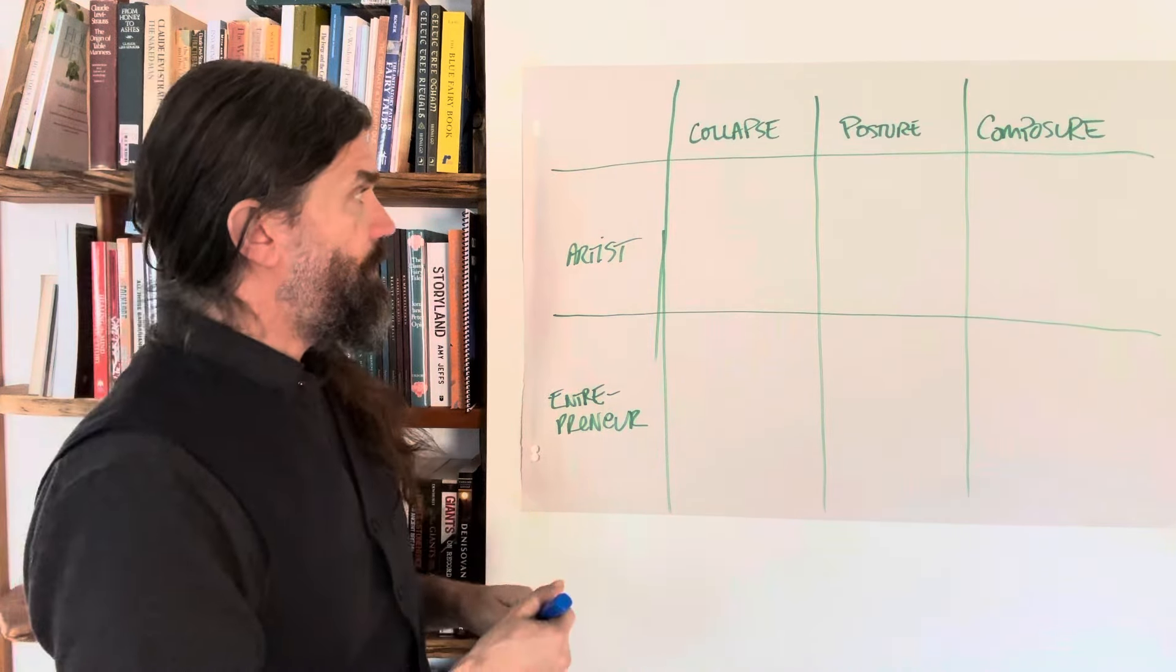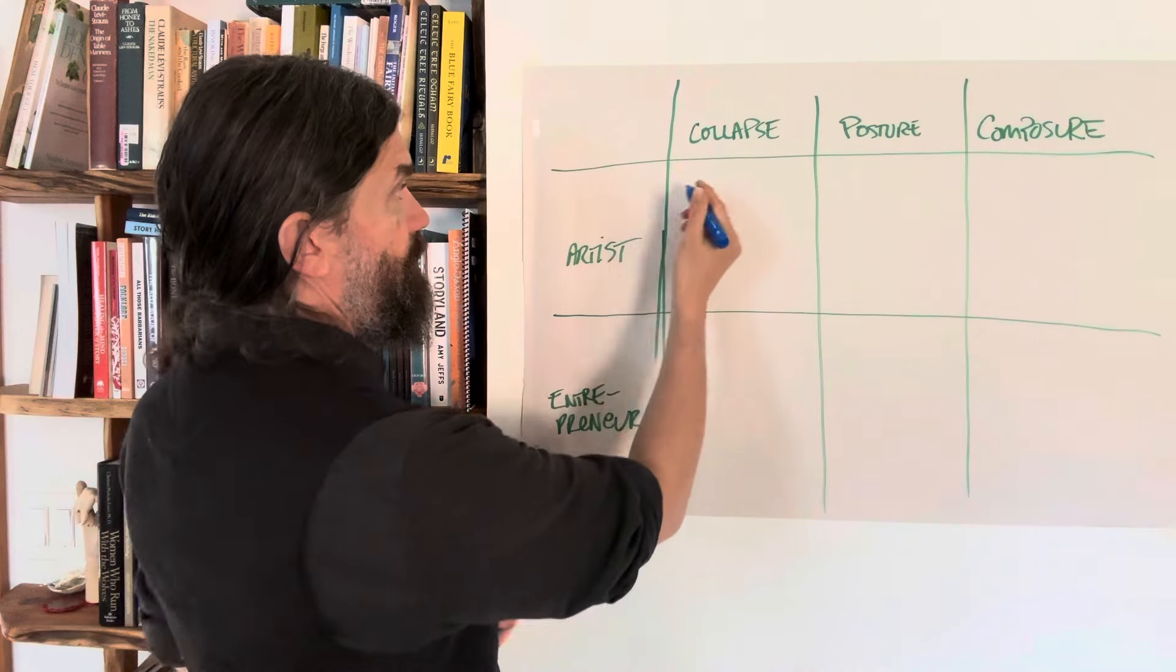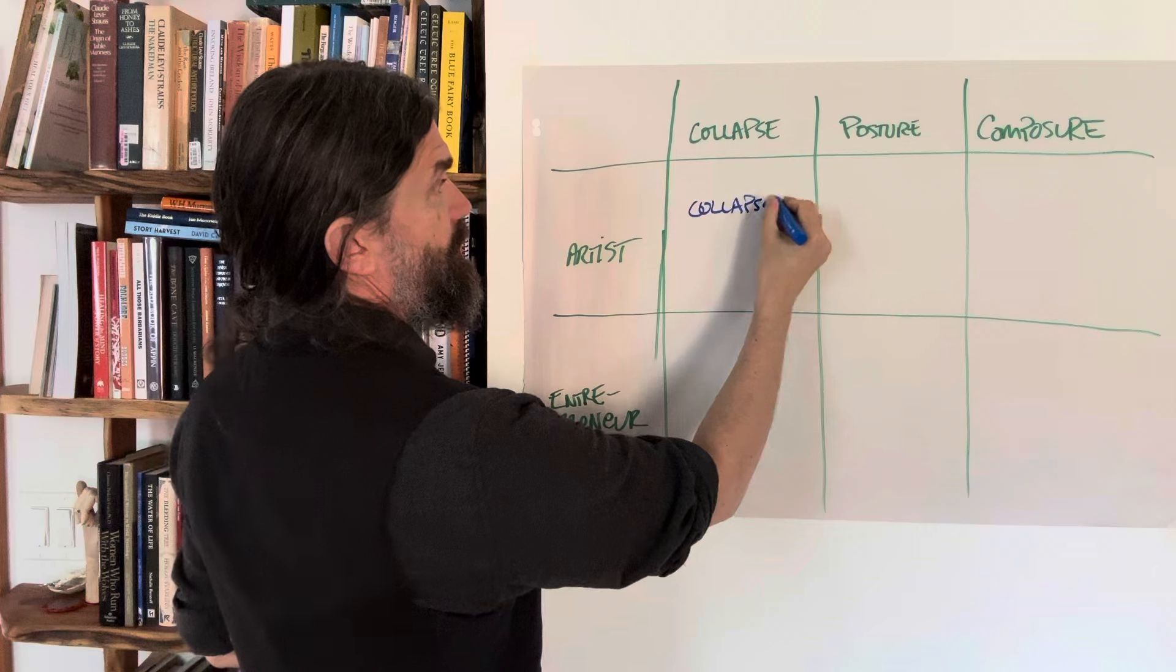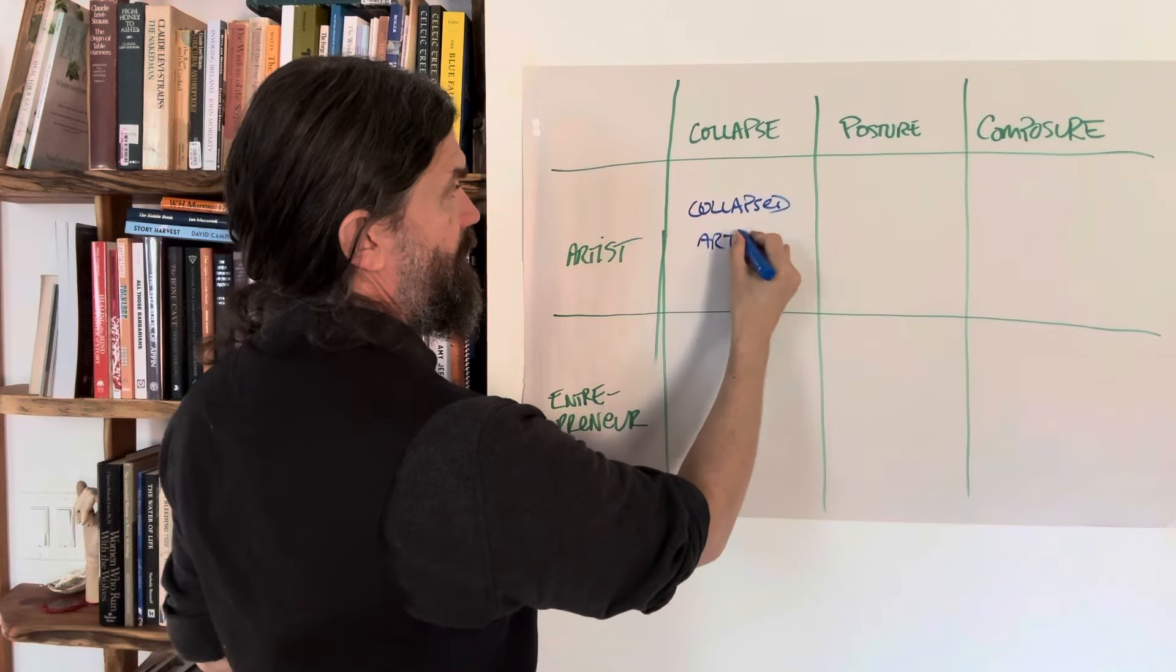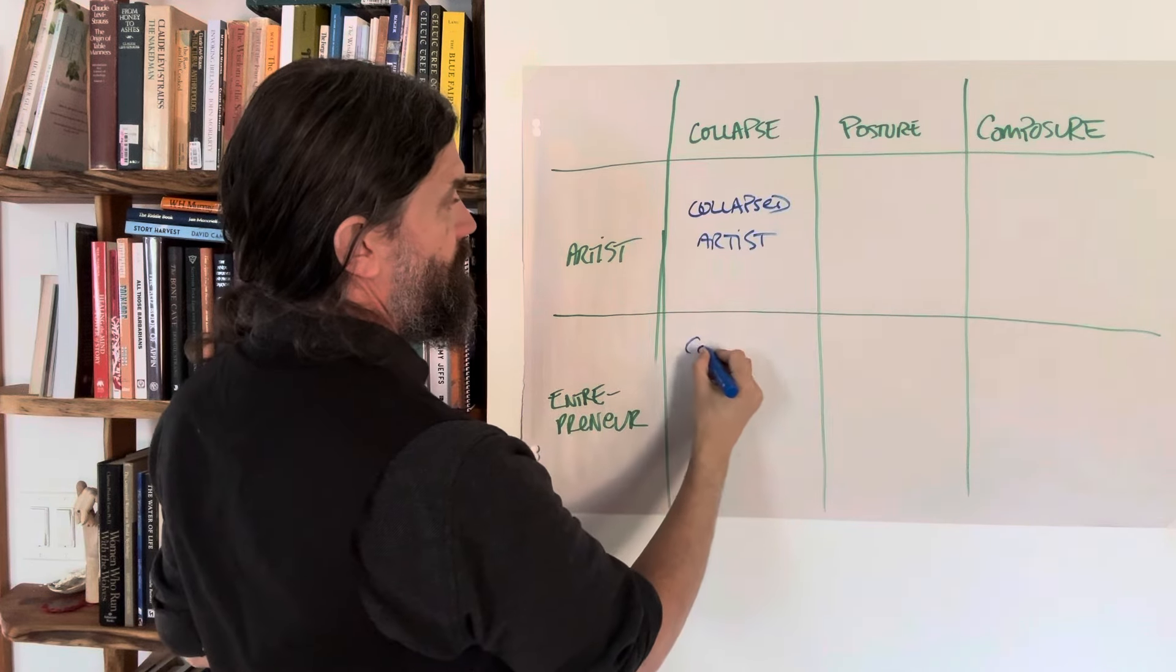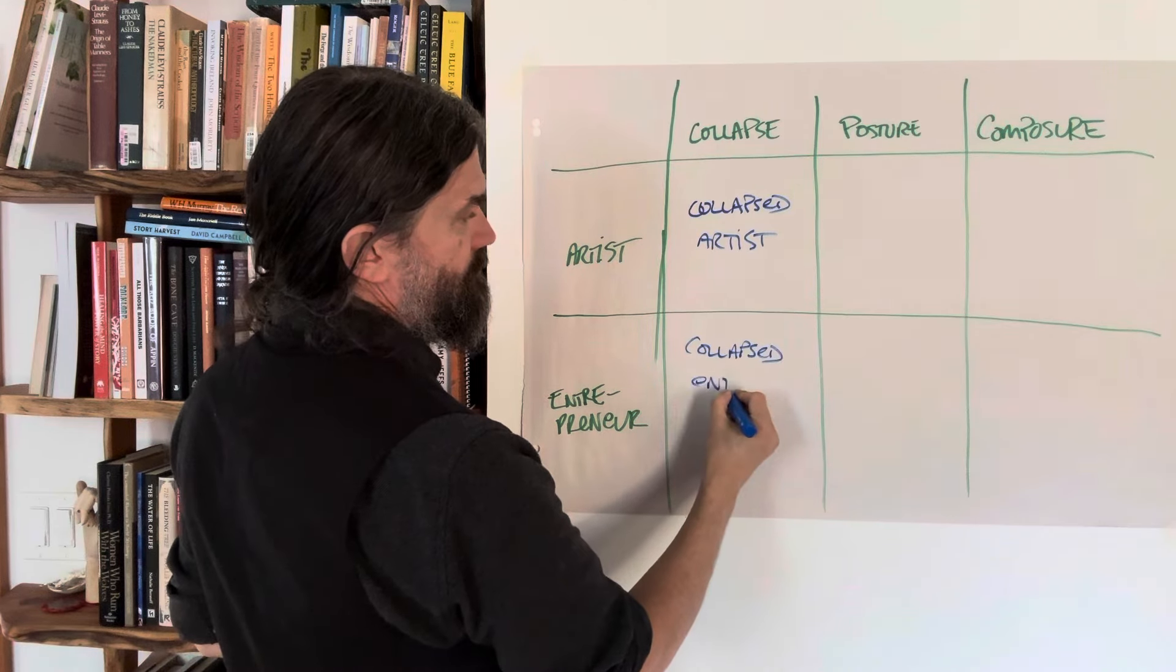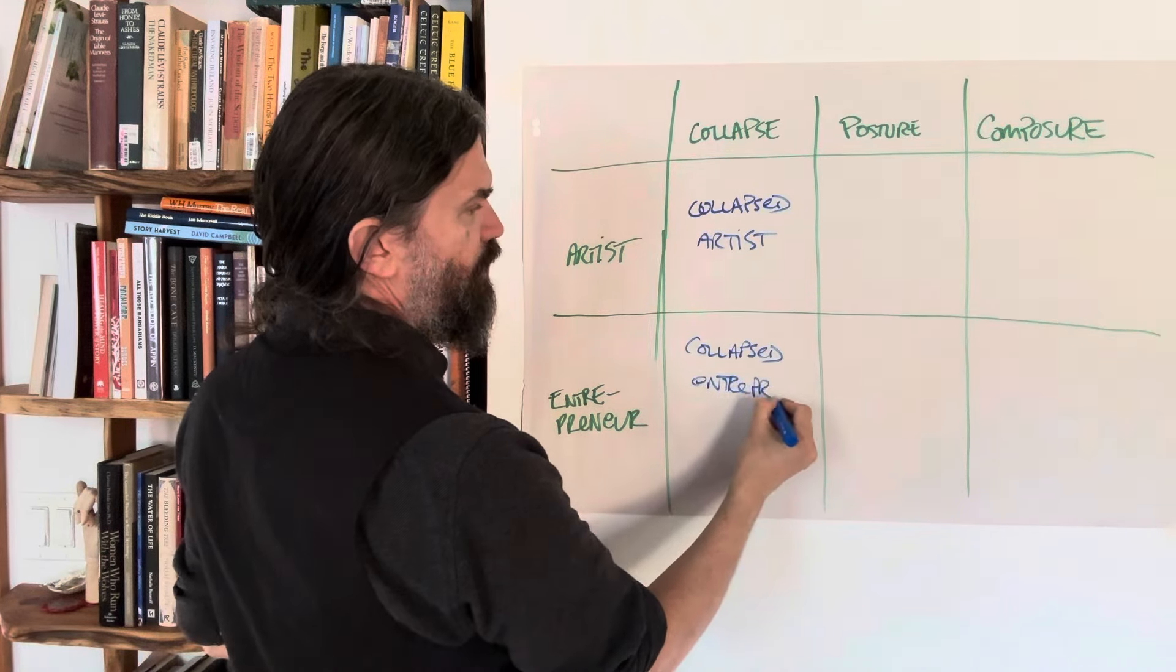So how do these combine? Well, of course, you've got the collapsed artist here, and you've got the collapsed entrepreneur here.